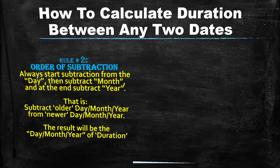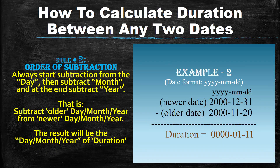Another example: you are provided with 20th November 2000 and 31st December 2000. What is the duration between these two dates? Again, keep the relatively newer date above and older date below, and start from the day part. So 31 minus 20 equals 11, and 12 minus 11 equals 1, and year 2000 minus 2000 equals 0. So the duration is one month and 11 days.